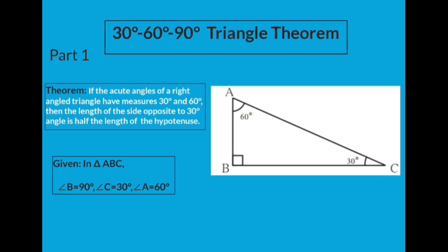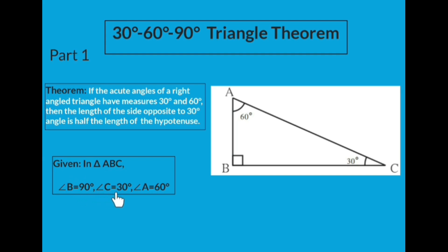The first step to prove any theorem is to draw a proper diagram. Here is the diagram of right-angled triangle ABC in which angle A is 60 degrees, angle C is 30 degrees, and angle B is 90 degrees. So the given information is: in triangle ABC, angle B equals 90 degrees, angle C equals 30 degrees, and angle A equals 60 degrees.